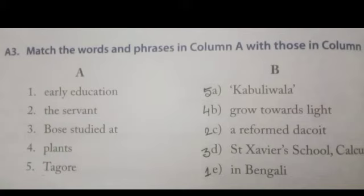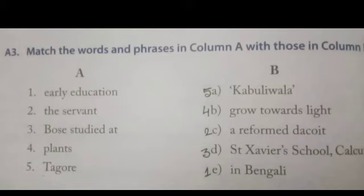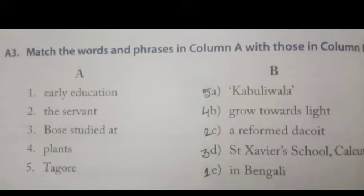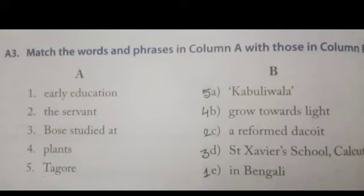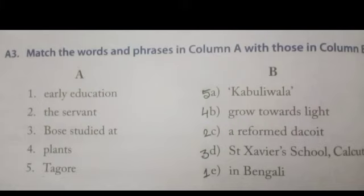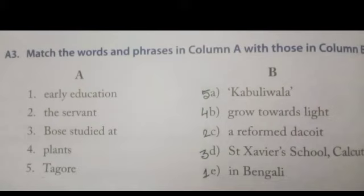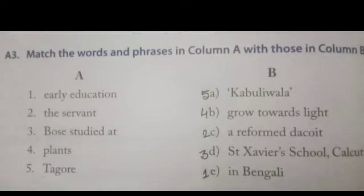Number 3: Bose studied at — answer is D, St. Xavier School, Calcutta. Number 3 matches number D. Number 4: Plants — answer is B, Grow towards light. Number 4 answer is number B, Grow towards light. Number 5: Tiger — answer is A, Kabuliwala.